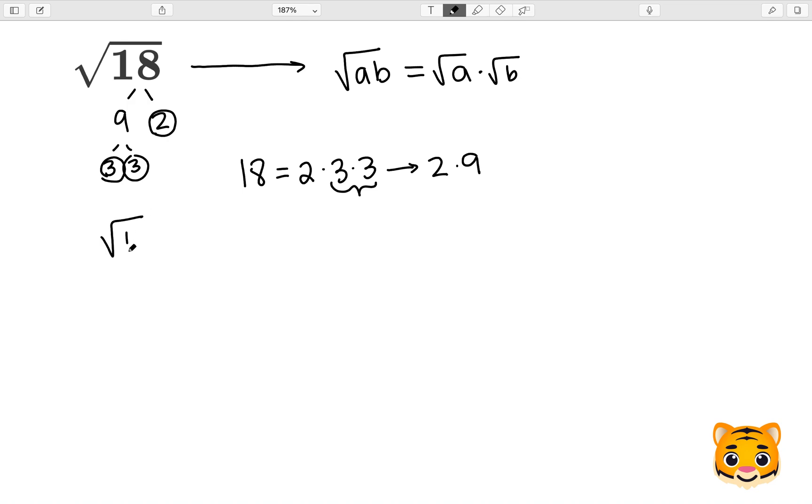Now we want to do the square root of 18. We can then do the square root of 2 times 9, which then gives us the square root of 2 times the square root of 9. We know the square root of 9 is 3, so then we can rewrite this as 3 root 2.